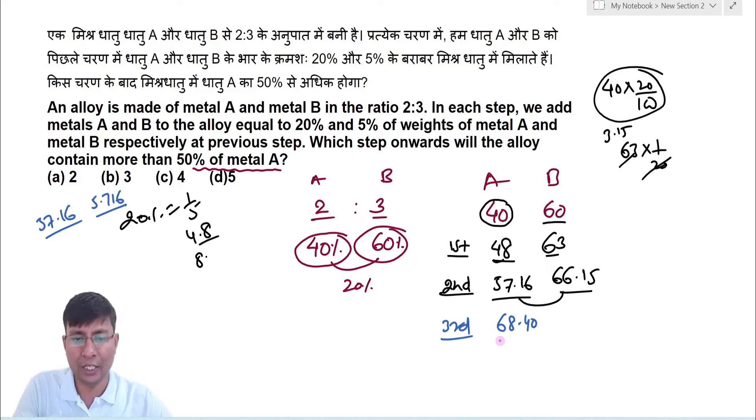तो यह वाला value का quantity कितना होगा इसका भी आप 5% add करोगे तो इसका 5% 66.15 divided by 1 upon 20. तो बच्चो यह तो 3 से ज्यादा ना तो उस case में जो B का quantity है वो 68.4 से ज्यादा होगा. तो इस case में यह value इसको 3 से divide करोगे तो 3 और 0.25 से ज्यादा होगा तो अभी भी यह लगभग 69.50 के आसपास है. अभी भी यह 50% से ज्यादा नहीं है.